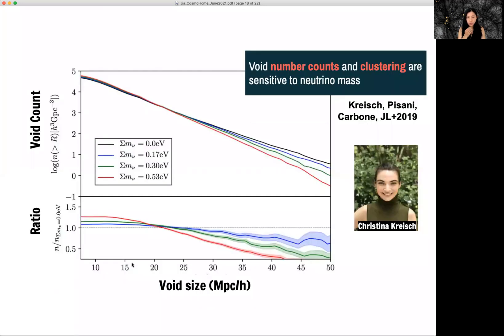With Christina Kreisch, we looked into the impact of neutrinos on void size function. So on x-axis, they are voids of different size, small voids and large voids. On the y-axis,